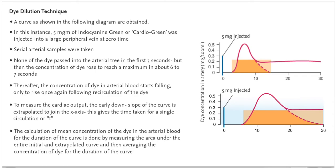The calculation of mean concentration of the dye in the arterial blood for the duration of the curve is done by measuring the area under the entire initial and extrapolated curve, and then averaging the concentration of dye for the duration of the curve.